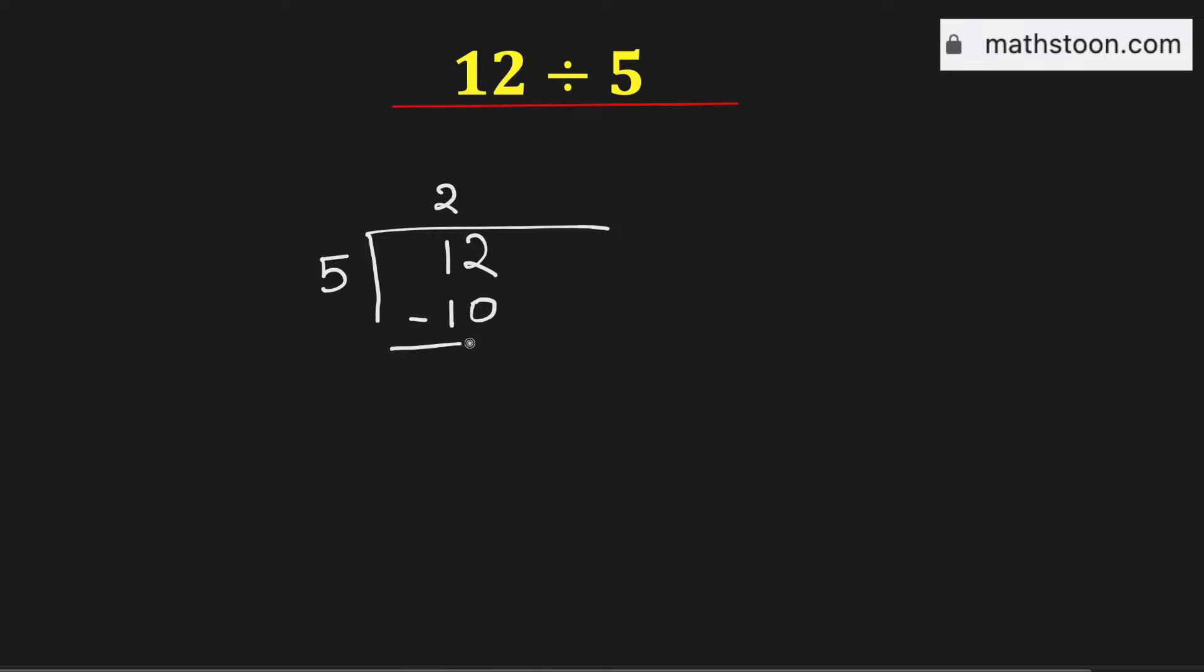We need to subtract, so it will be 2. Now we know that 5 cannot go into 2, so we need to put a point here and then we need to add 0 here.